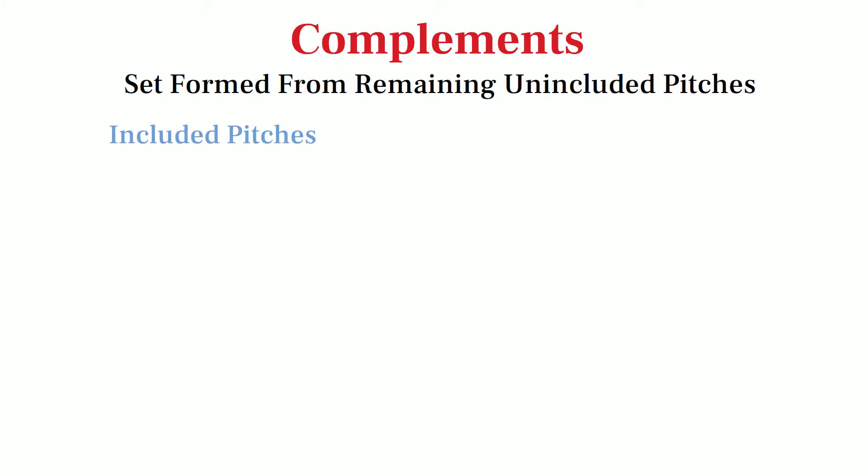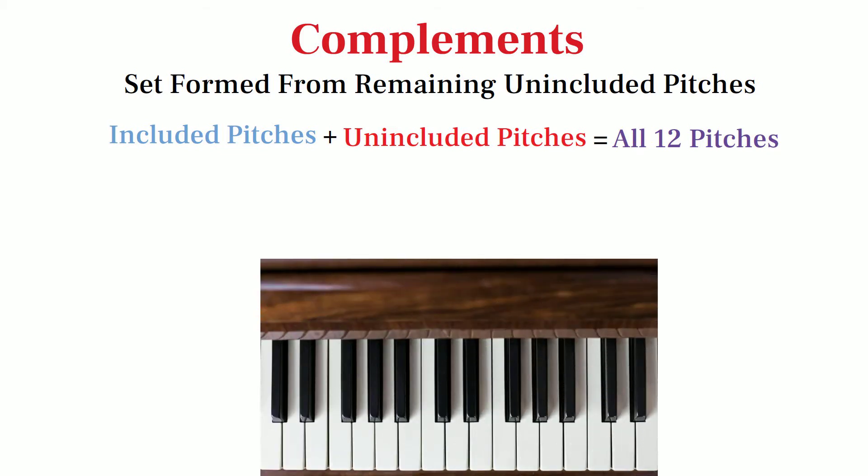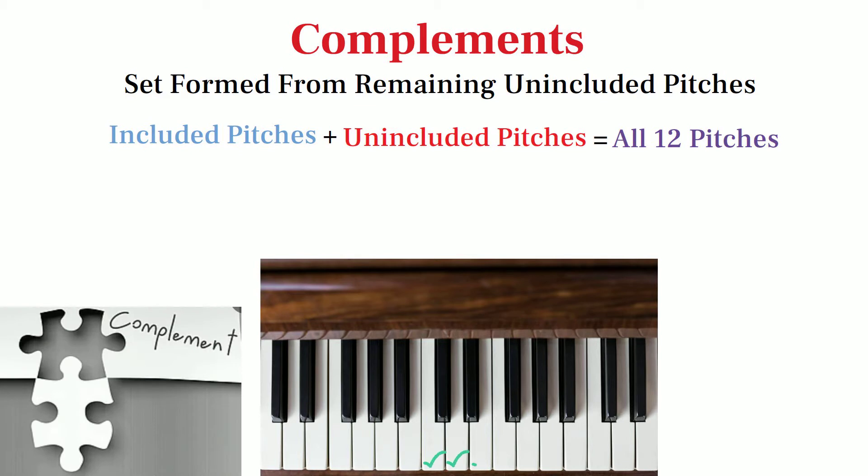The complement of a set is the set that's formed from all the other pitches not included in the original set. This means that two complementary sets together make all twelve tones. The clearest way to see complementary sets is by looking at the black and white keys of a keyboard as an example of complementary sets.